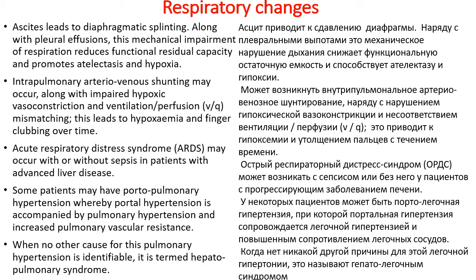Acute respiratory distress syndrome (ARDS) may occur with or without sepsis in patients with advanced liver disease. Some patients may have portopulmonary hypertension, where portal hypertension is accompanied by pulmonary hypertension and increased pulmonary vascular resistance. When no other cause for this pulmonary hypertension is identifiable, it is termed hepatopulmonary syndrome.